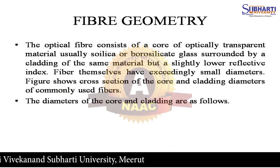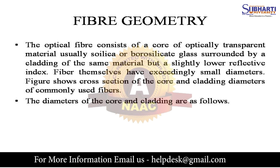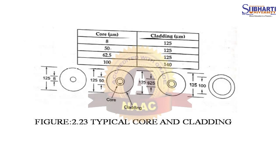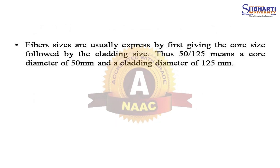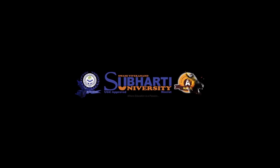Fiber Geometry: The optical fiber consists of a core of optically transparent material, usually a borosilicate glass, surrounded by a cladding of the same material but with a slightly lower refractive index. Fiber sizes are usually expressed by first giving the core size followed by the cladding size.